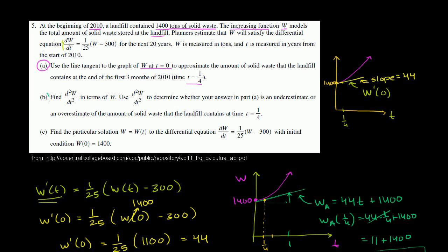Now ready for part b. Find the second derivative of w with respect to t, in terms of w. Use this second derivative to determine whether your answer in part a is an underestimate or an overestimate for the amount of solid waste that the landfill contains at time t equals 1/4.